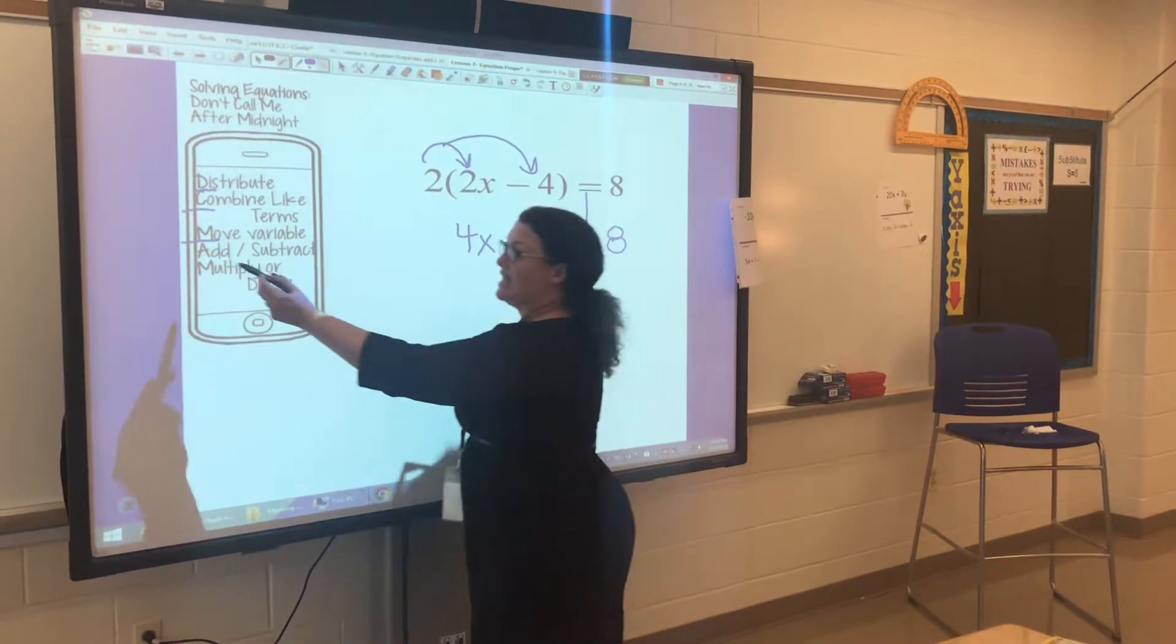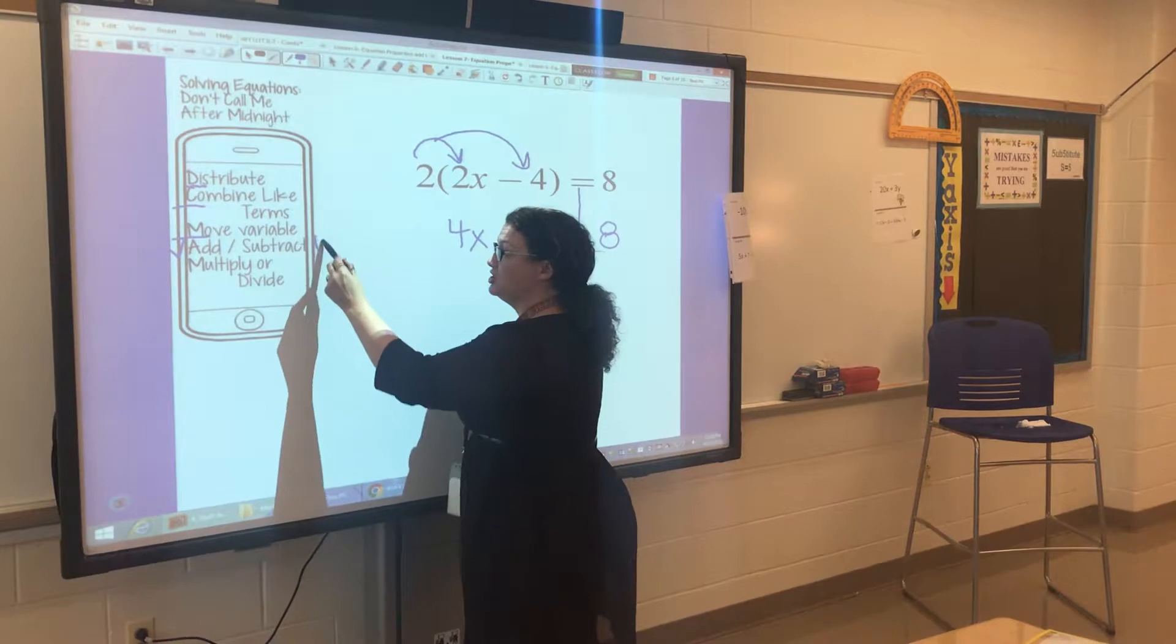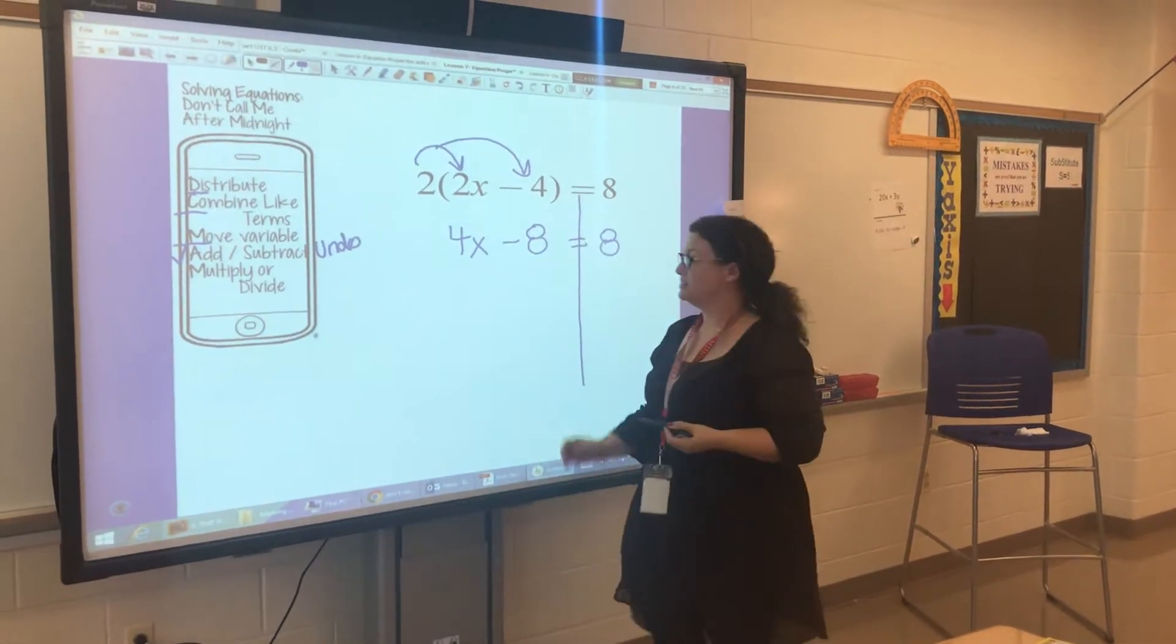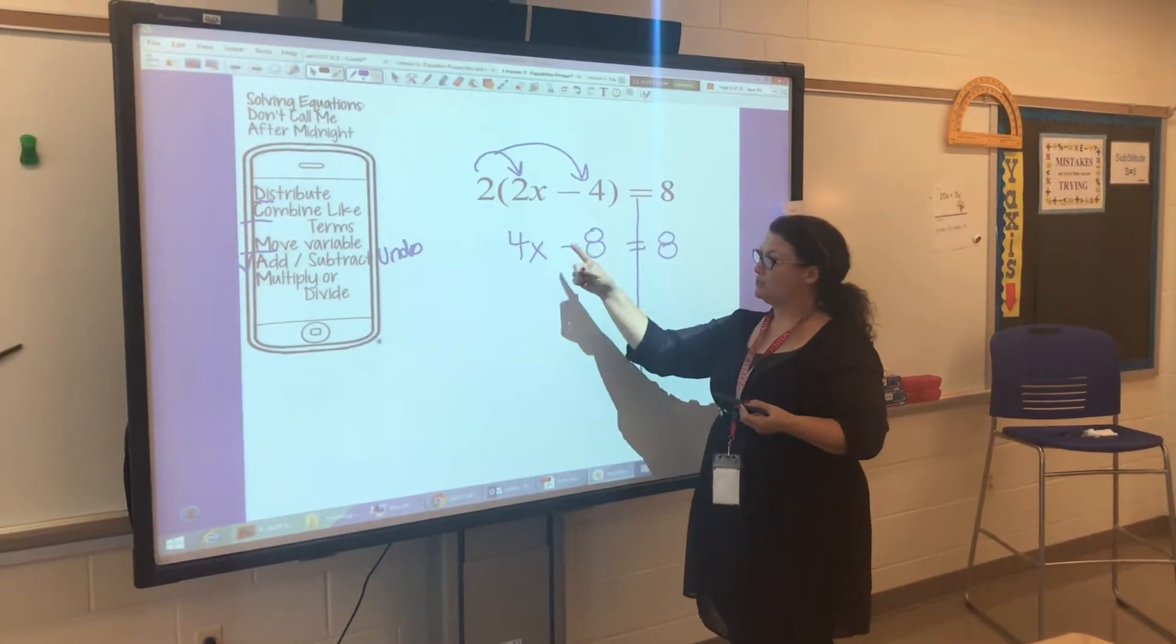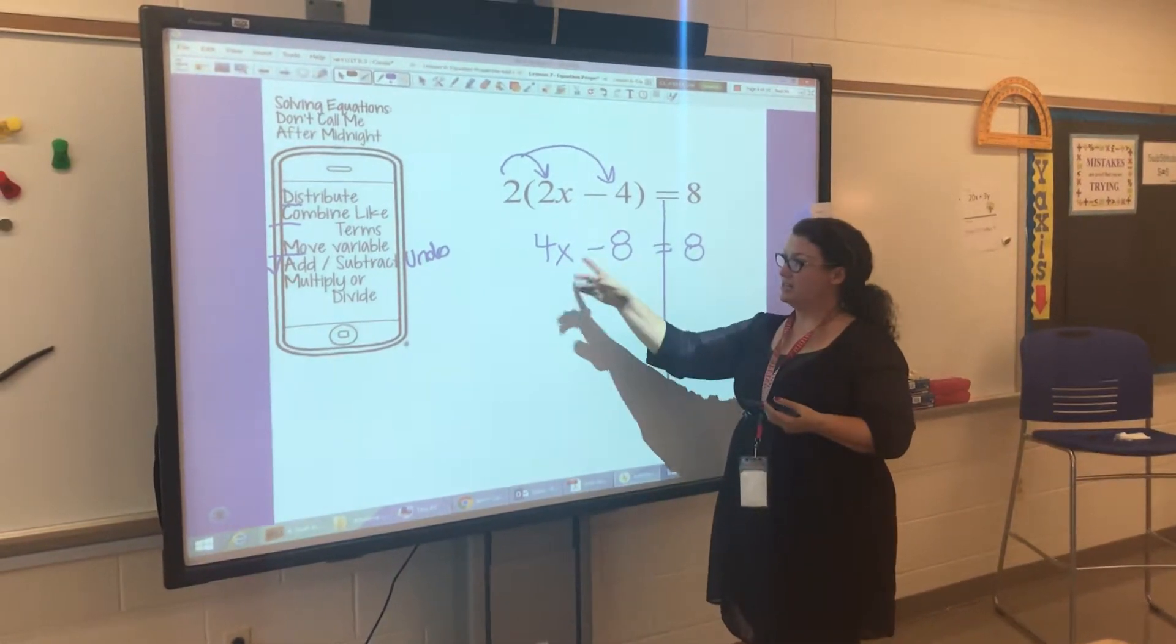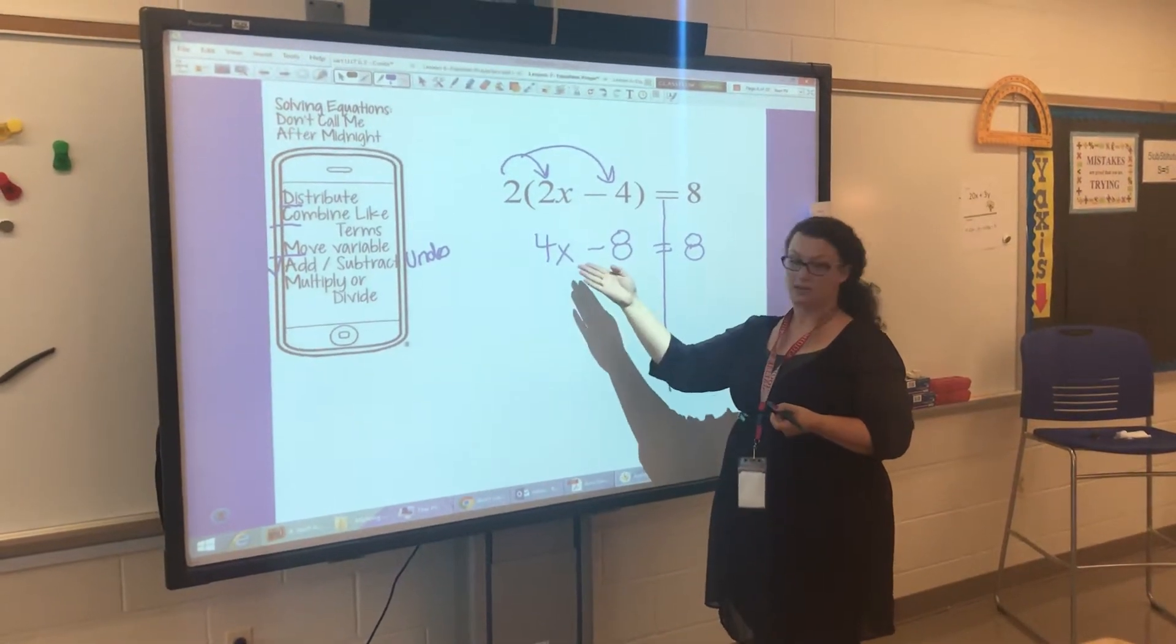The next step says adding and subtracting. It should say undo what's being added and subtracted. So in this expression, negative 8 is being subtracted from your variable.